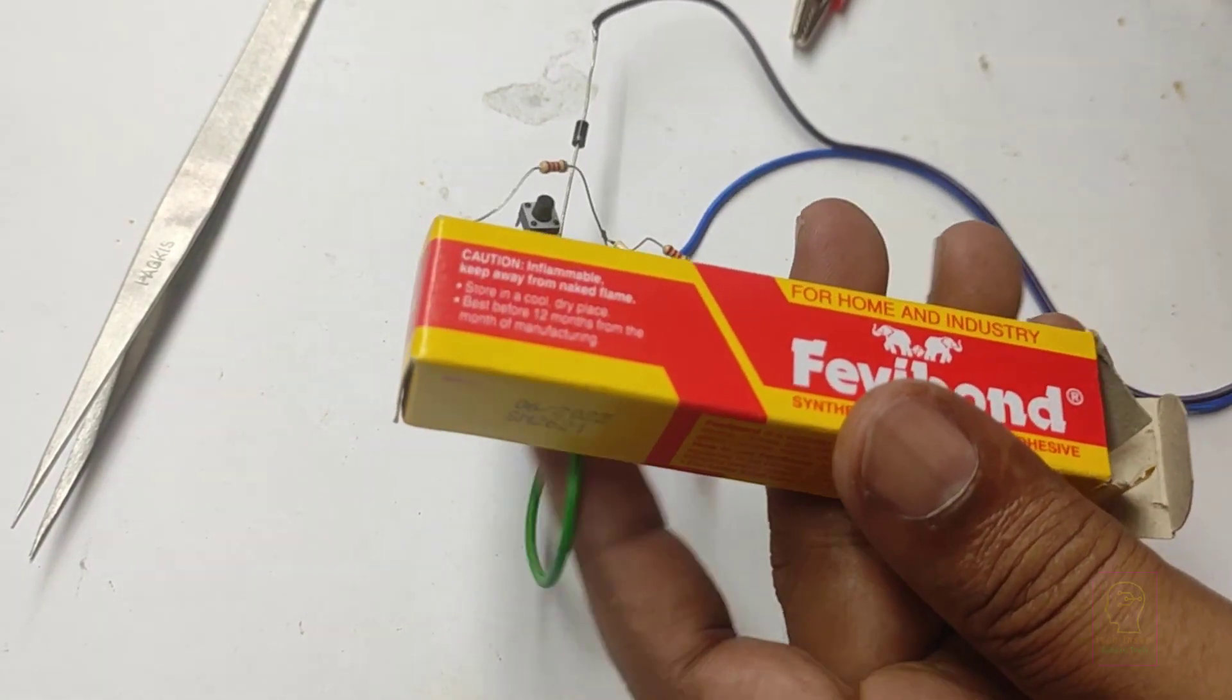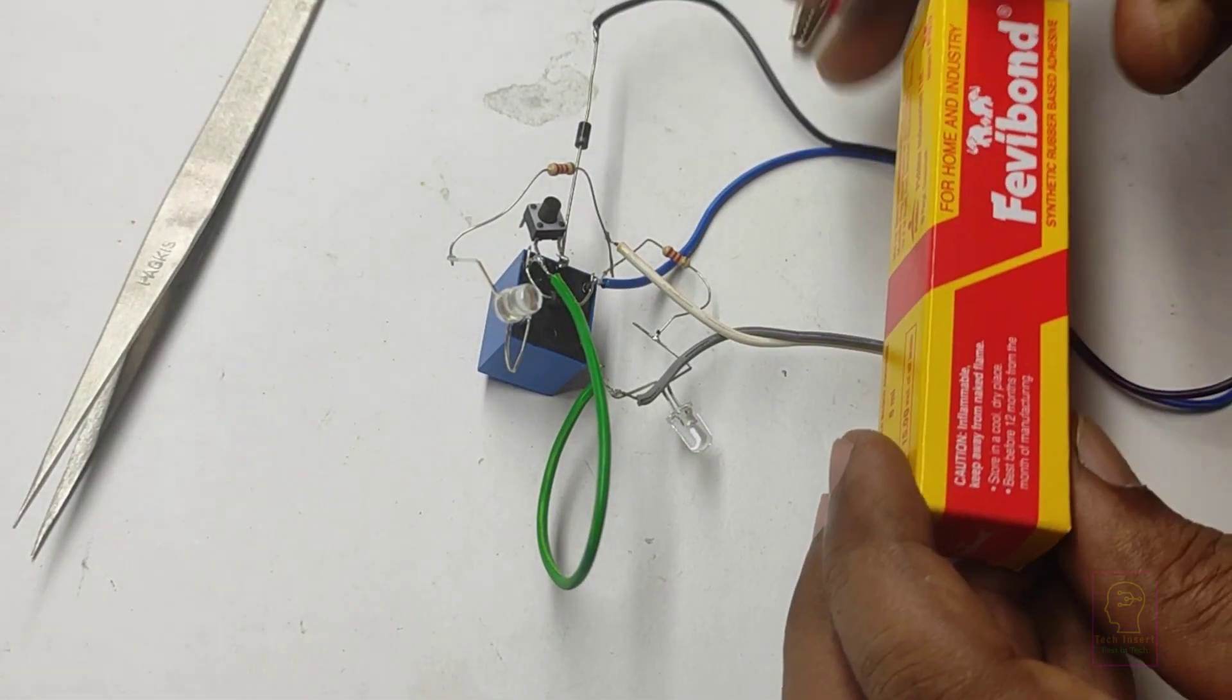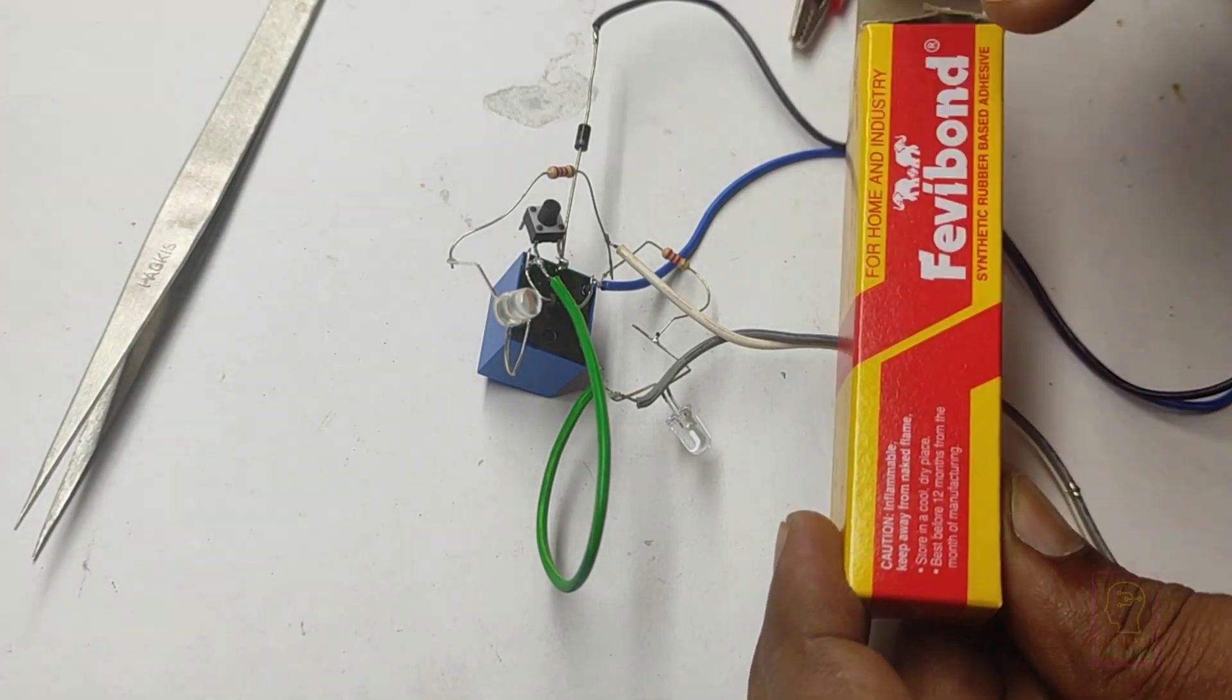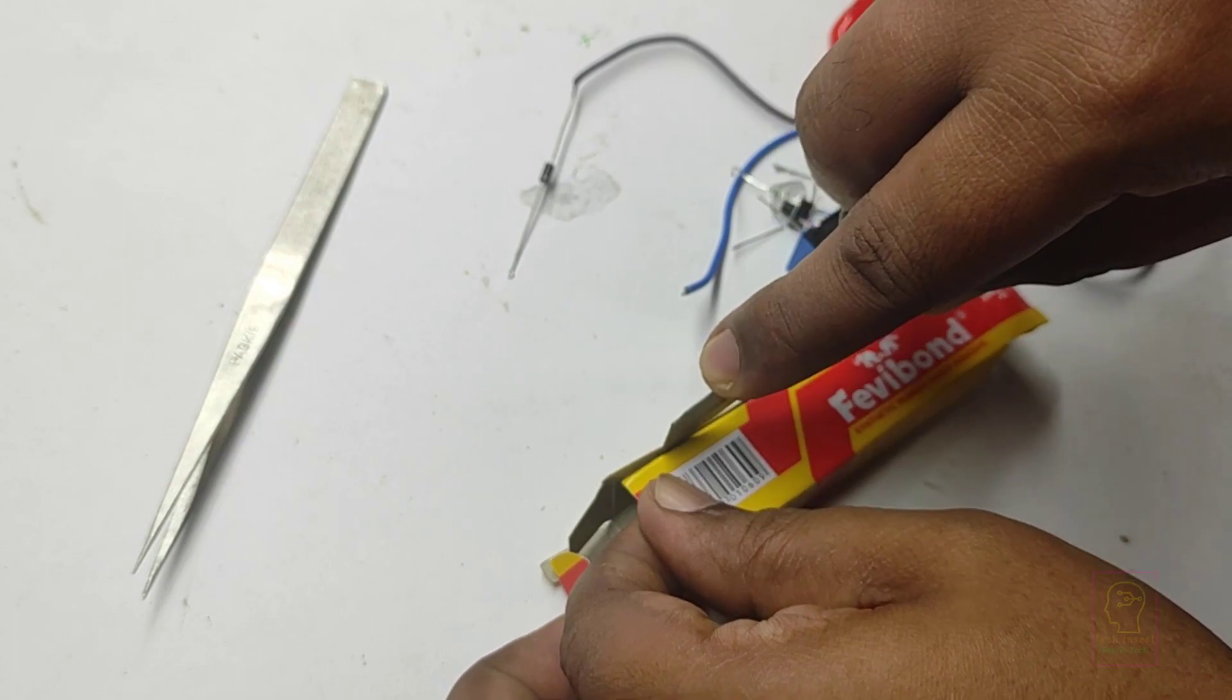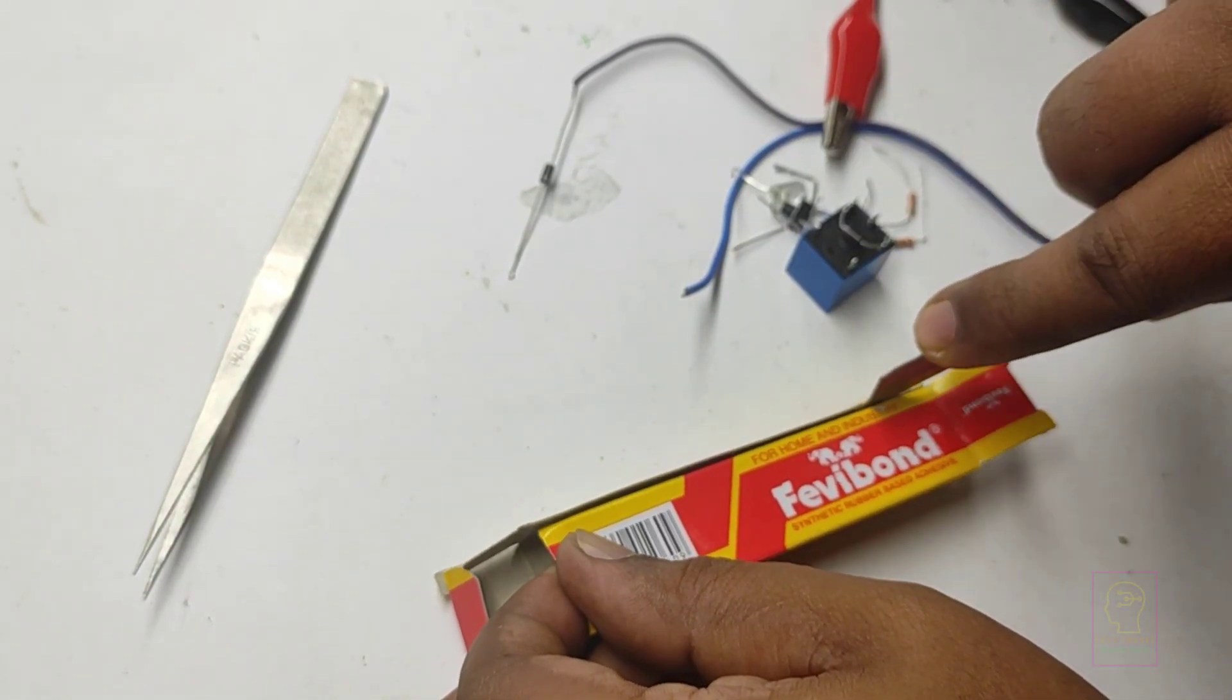Now we will package the circuit inside this box. This will be the input line and this will be the output line, and we will fix the LEDs and reset button here. If you have any more ideas of packaging this circuit, please comment on this video.